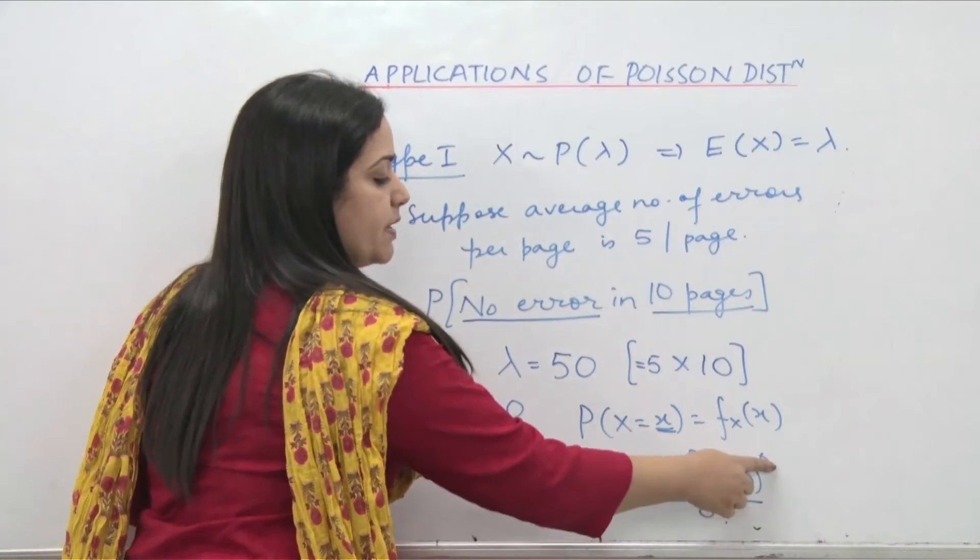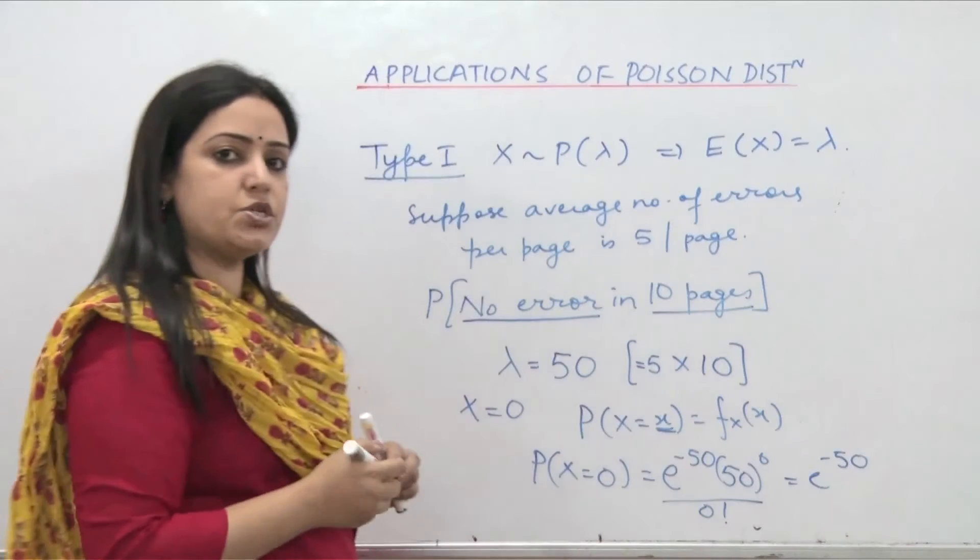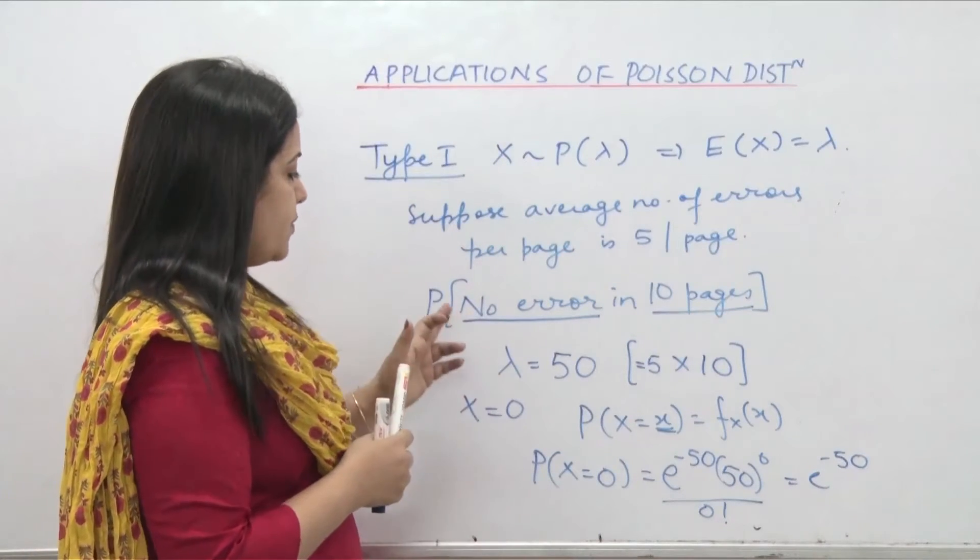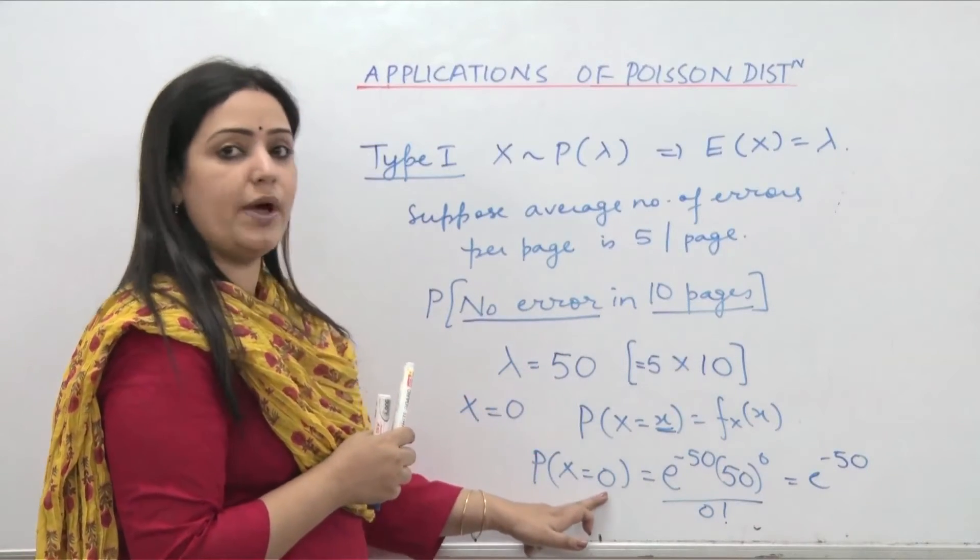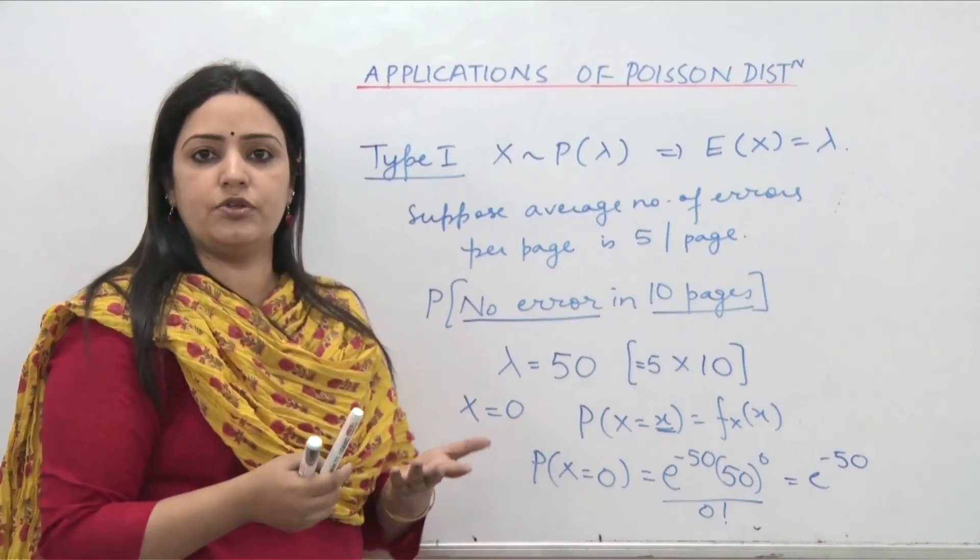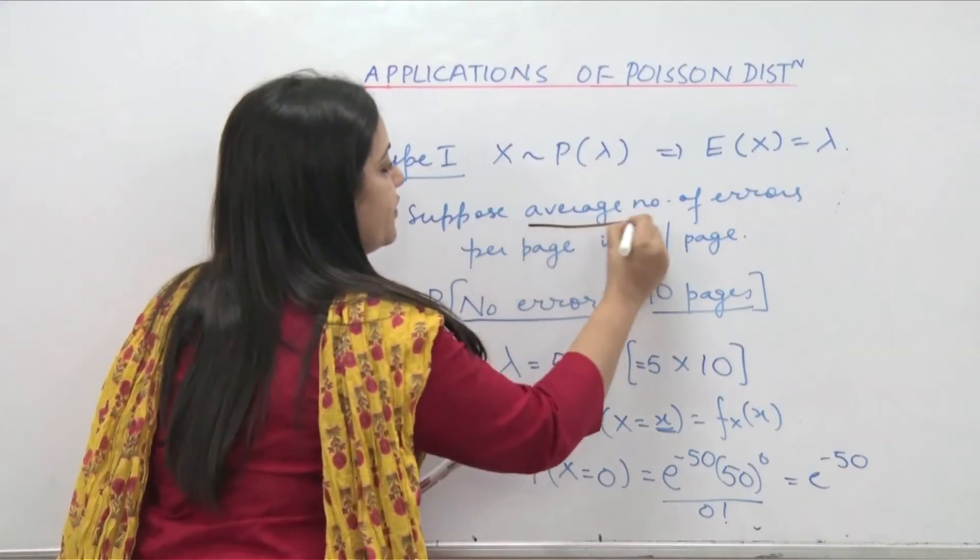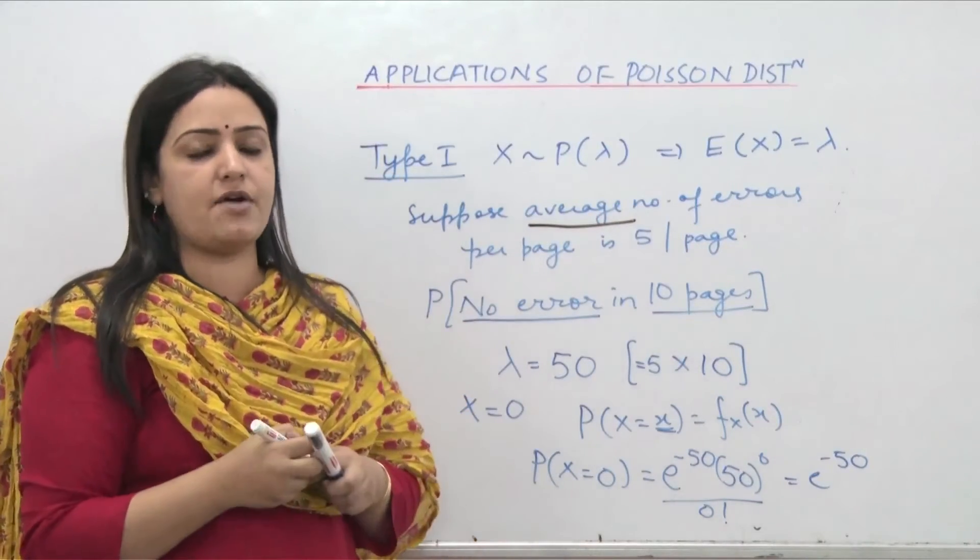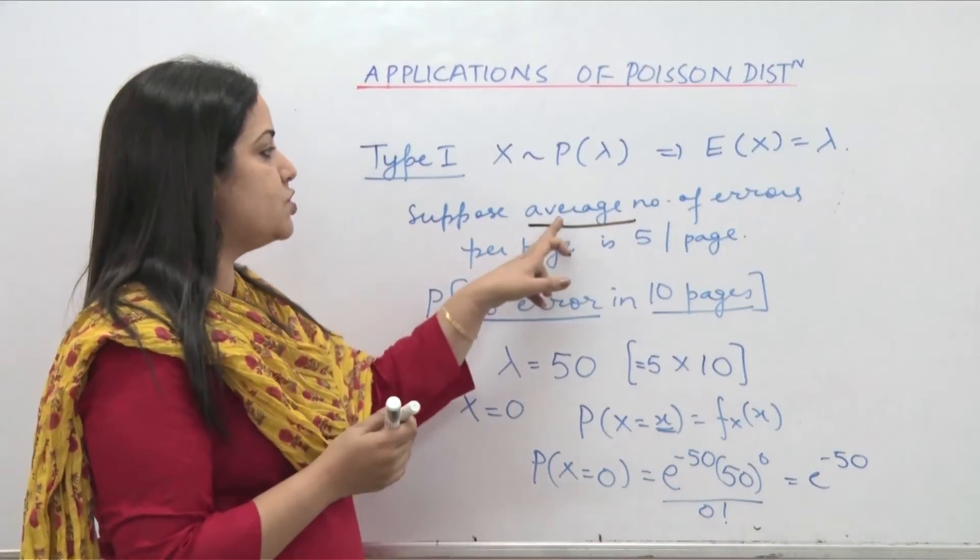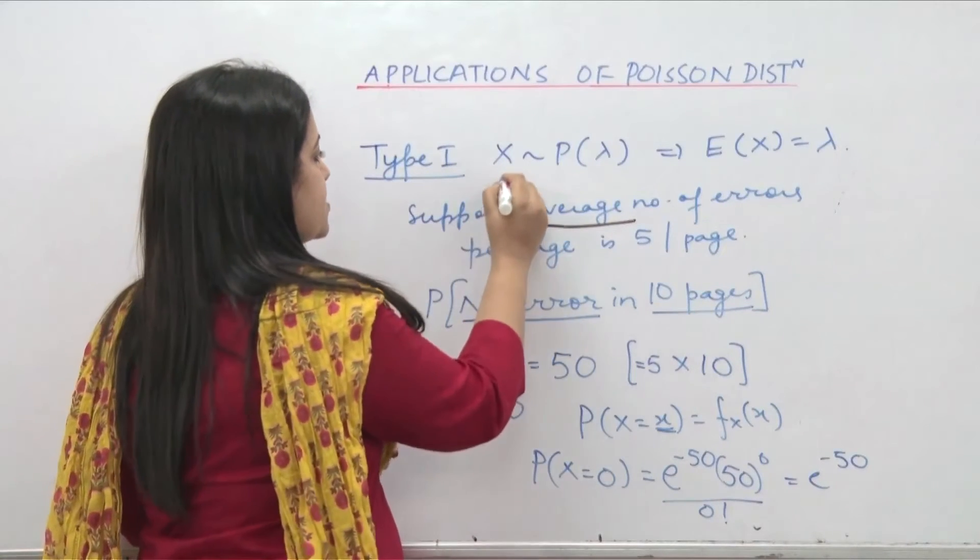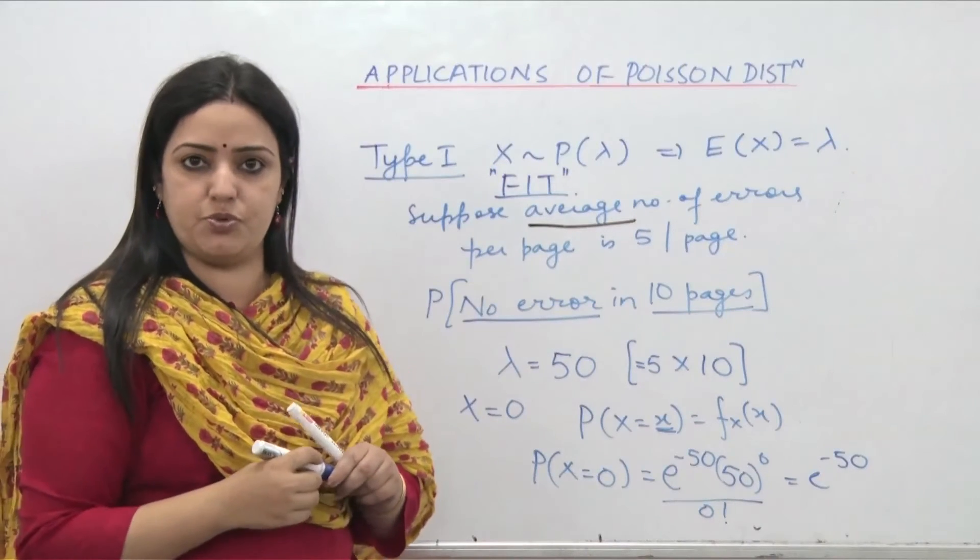In the same situation if you were to be asked probability of 1 error in 10 pages, then lambda will remain 50 and you put x equal to 1 and so on and so forth. So basically type 1 is used when average number of things is provided to us. That could be average number of errors, average number of accidents, average number of whatever situation is given to you where average number is provided. We can try to fit Poisson distribution. So this is called fitting of a Poisson distribution which is type 1.